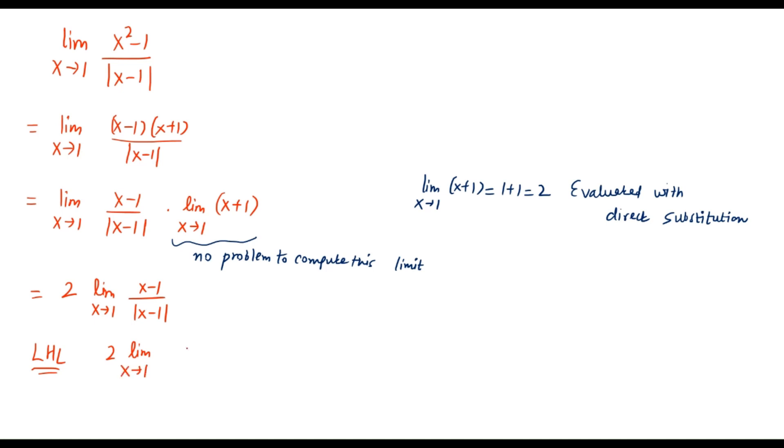So the left hand limit is given by x goes to 1 from the left, the same factor. Now in order to understand the value of the left hand limit, I might have to recall the definition of absolute value function, which is the mod x function. Why do we need to do that for this specific limit?